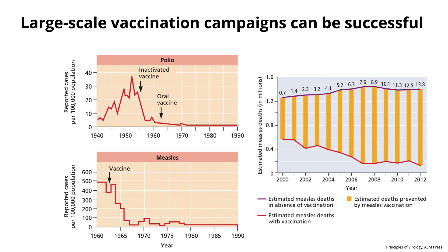On the right graph is the number of measles deaths that have been prevented by vaccination. The top curve shows estimated measles deaths from 2000 to 2012 which would have occurred in the absence of vaccination — we're looking at 1.2 to 1.6 million deaths globally on the Y-axis. On the bottom are the actual deaths with measles vaccination, and the bars in between are the estimated deaths prevented. So many, many millions of deaths prevented by this single vaccine.